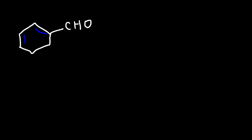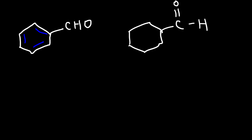What is the name of this next molecule? We can write the aldehyde group as CHO, or as a carbon with a double bond to oxygen and a hydrogen attached. So we have a benzene ring and an aldehyde functional group — instead of benzene, this is called benzaldehyde.